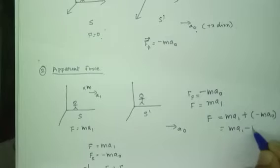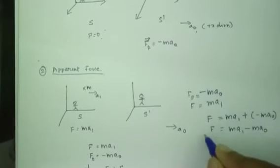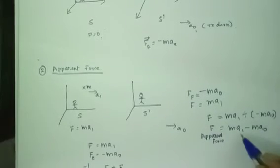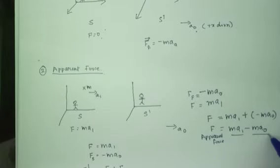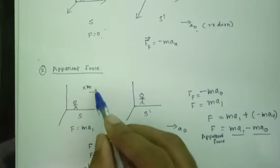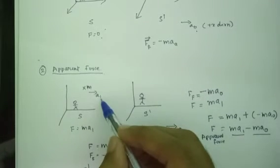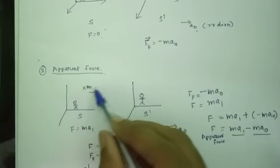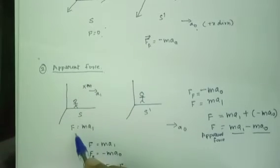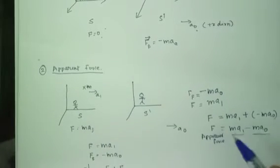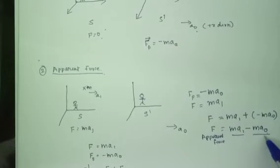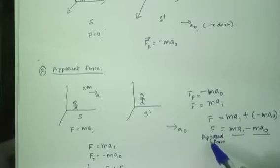The result is equal to mA1 minus mA0. This is the apparent force, which is the sum of actual force and fictitious force. The force in the moving frame will be F equal to mA1. So F equals mA1 minus mA0 — where mA1 is the actual force and minus mA0 is the fictitious force. Together they give the apparent force.